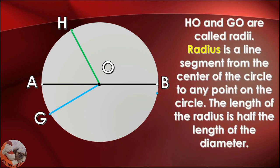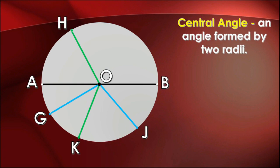Line segment HO and line segment GO are called radii. Radii is the plural of radius. A radius is a line segment from the center of the circle to any point on the circle. The length of the radius is half the length of the diameter.